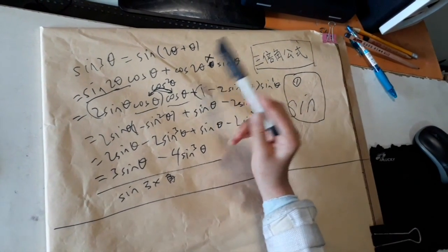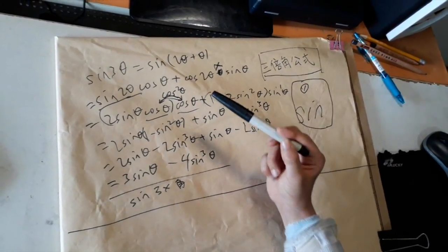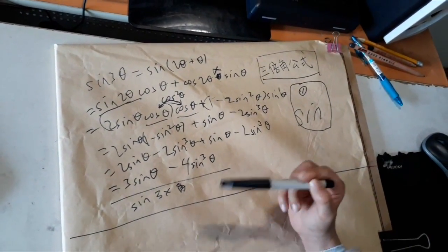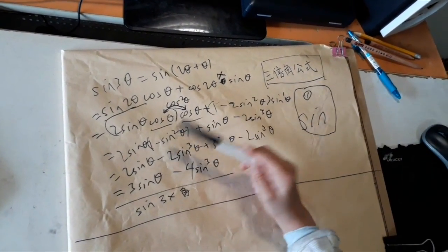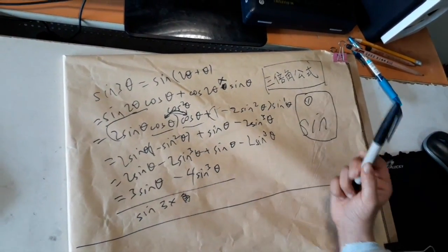But I want to write everything in sine. Because sine squared theta plus cosine squared theta equals 1, I'm going to write cosine squared as 1 minus sine squared theta.